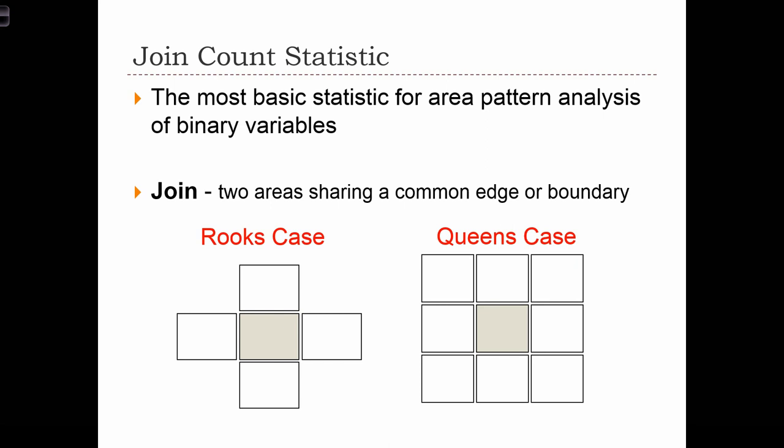We're going to define two different types of join patterns: the rook's case and the queen's case. So in the rook's case, when we have a target cell, I'll put a T here, this is the target, and we want to know which boundaries, which neighborhoods, or which zones on the map join with the target.